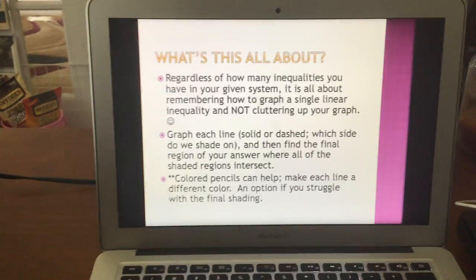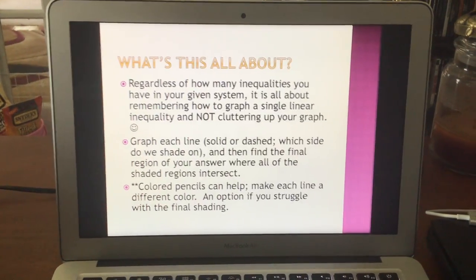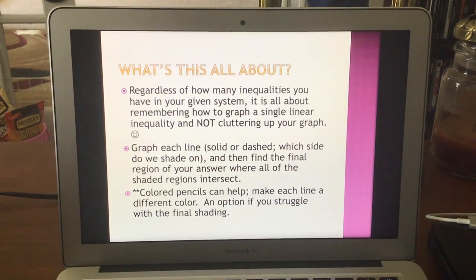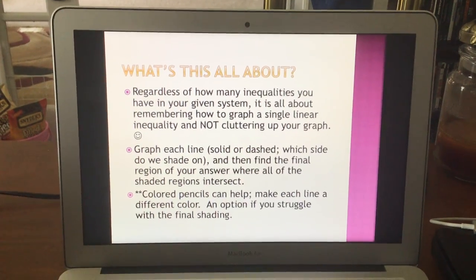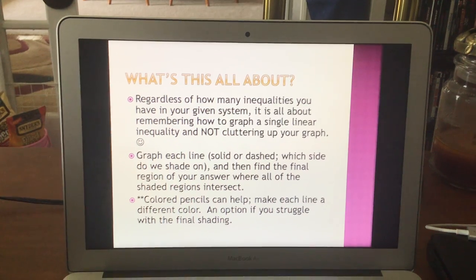depending on what your symbol is, if it's just greater than or if it's greater than or equal to, that determines if it's solid or dashed. You determine which side to shade on, which is going to be where it's true, and then we're gonna find the final shaded region where all of our shaded regions intersect.